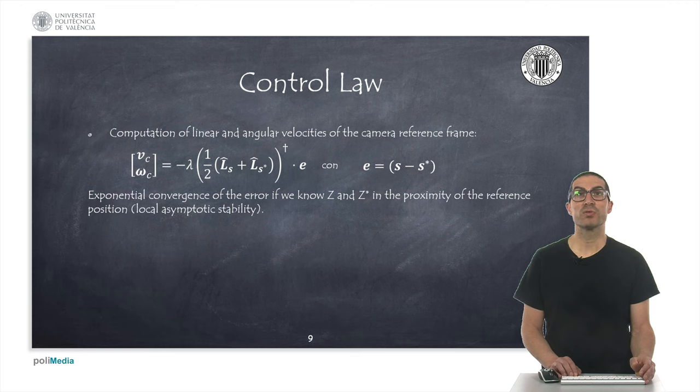A proportional controller on the error between the detected and reference features will allow exponential convergence using the pseudo-inverse of the interaction matrix. The convergence is guaranteed in the proximity of the reference position. This is a local asymptotic convergence if we know Z and Z star. In practice, the region of convergence is reasonably large.